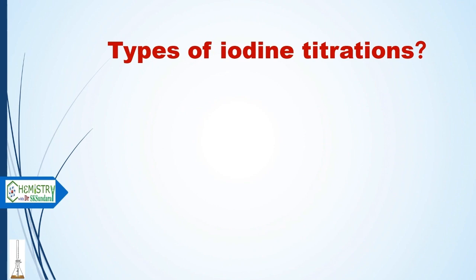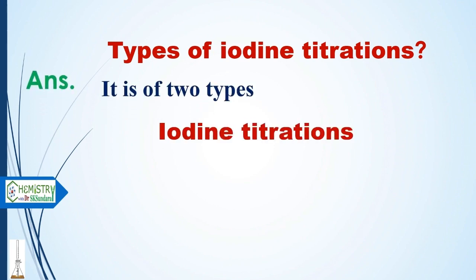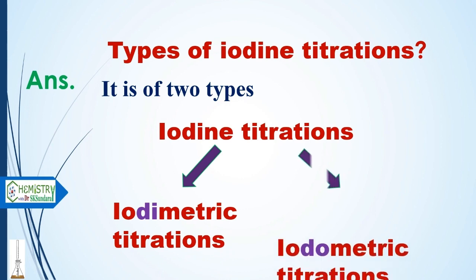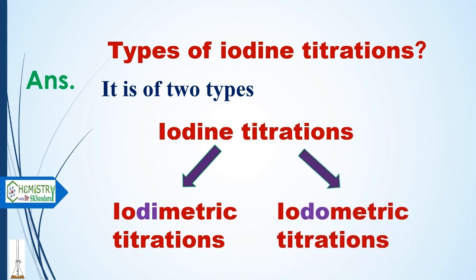Next is the types of iodine titrations. Iodine titrations are of two types: one is iodimetric and the other is iodometric. Although they seem very similar, they are quite different. I will explain the difference between them in detail in another video, and I will give the link in the description box.